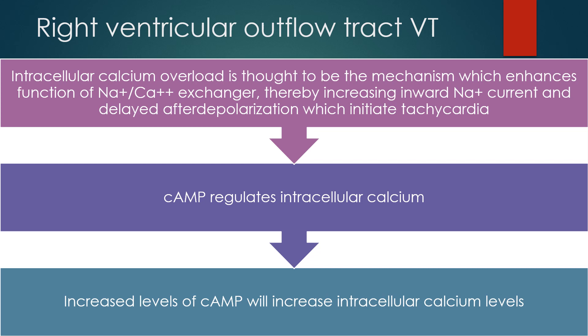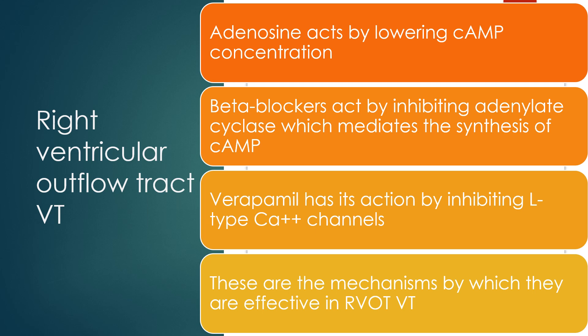Intracellular calcium overload is thought to be the mechanism, which enhances function of the sodium-calcium exchanger, thereby increasing inward sodium current and delayed after-depolarization, which initiates tachycardia. Cyclic AMP regulates intracellular calcium; increased levels of cyclic AMP will increase intracellular calcium levels. Adenosine acts by lowering cyclic AMP concentration. Beta blockers act by inhibiting adenylate cyclase, which mediates the synthesis of cyclic AMP. Verapamil has its action by inhibiting L-type calcium channels. These are the mechanisms by which these drugs are effective in RVOT VT.